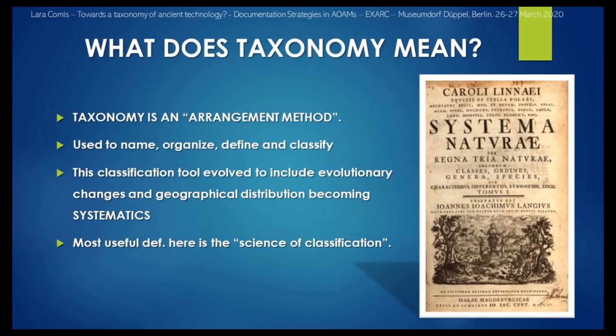Linnaeus was the pioneer of taxonomy. Later, the term started to include the evolution of living and extinct forms of life, and their geographical distribution, becoming part of what is known today as systematics. Among the many definitions we can apply to taxonomy, the most relevant to this paper is the science of classification.